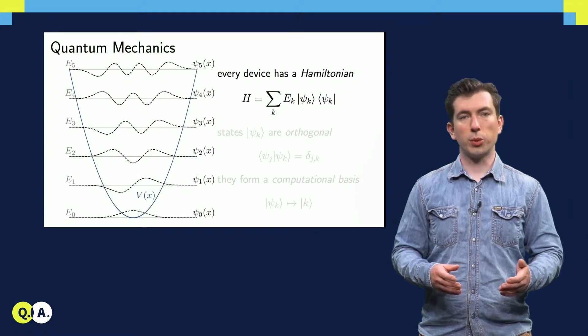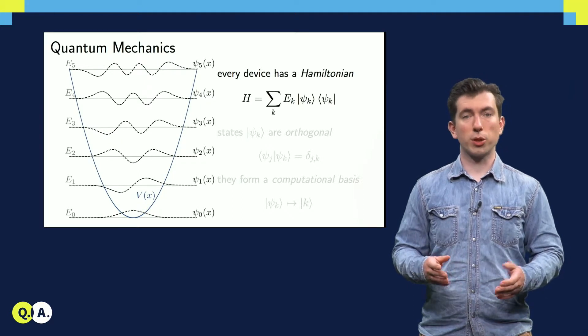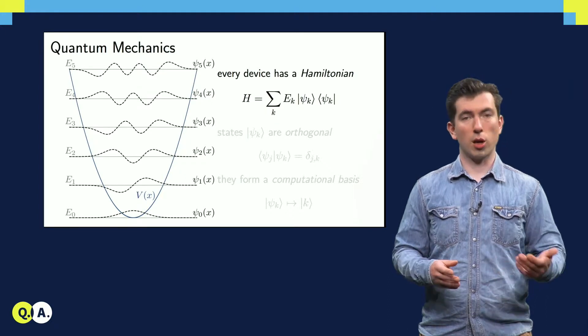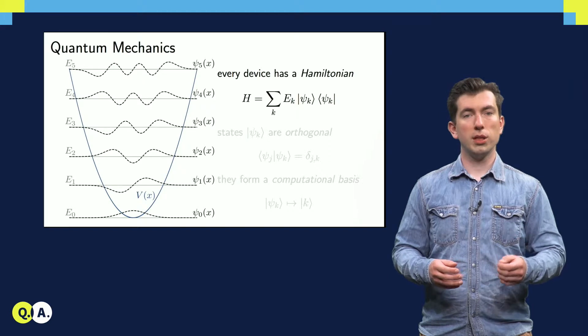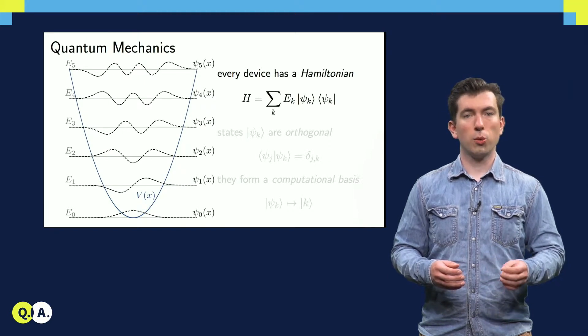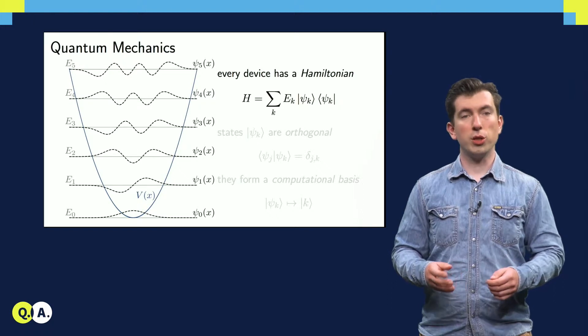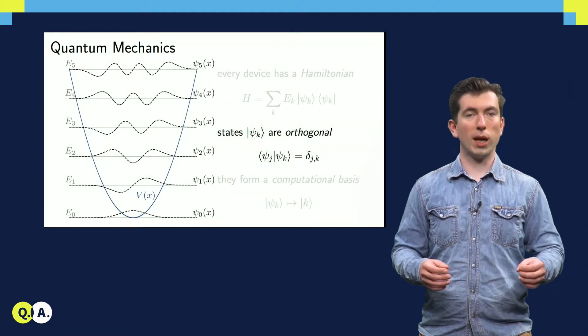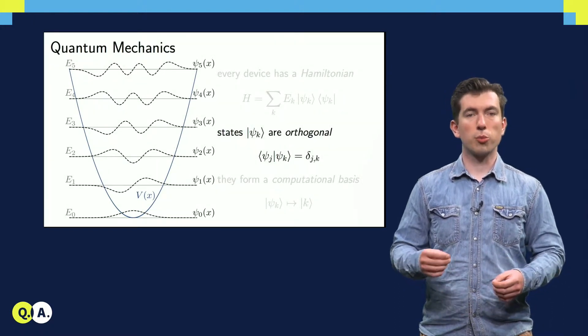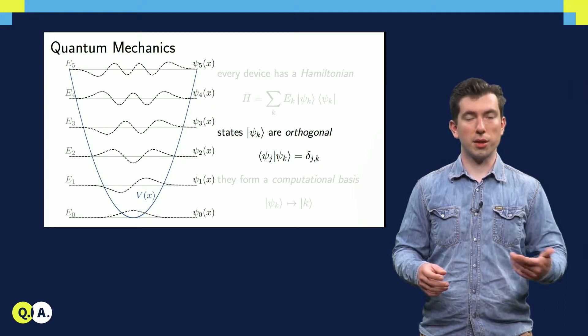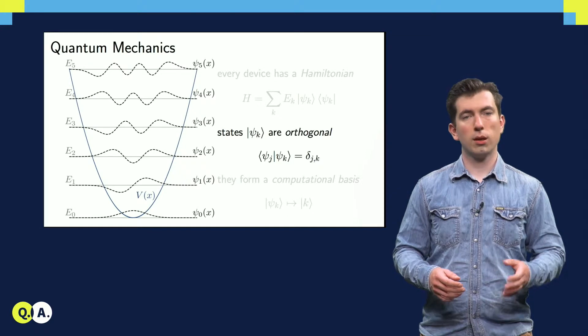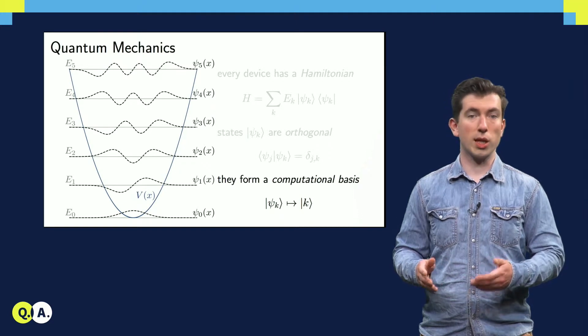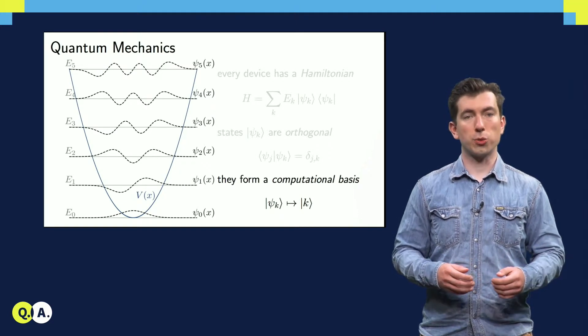Fortunately, the devices that we use to store and manipulate qubit states provide us with just such a default basis. One such device, which we see quite frequently in quantum mechanics, is the harmonic oscillator, shown on the left. These devices are described by a Hamiltonian, which is a matrix that assigns an energy E-k to each of its eigenstates, or preferred basis states, psi-k. These states are orthogonal and normalized, so we say that they are orthonormal, so the inner product of psi-j with any psi-k other than itself, psi-j, is 0. This allows us to use these states as a computational basis, replacing any detailed knowledge of the wave function psi-k with a simple label k that indicates which state we're talking about.